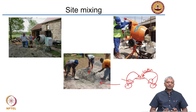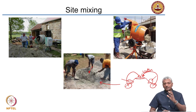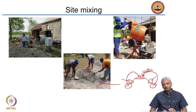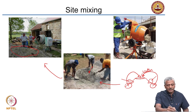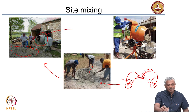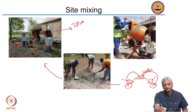But this is not something that you want at a proper construction site where you need good control on the quality of the concrete. In most cases of volume batching, these are the kinds of facilities that will be there. Or slightly more advanced — what this person is doing is he has got all the materials stacked up, takes a shovel and puts material directly into a tilting drum mixer.